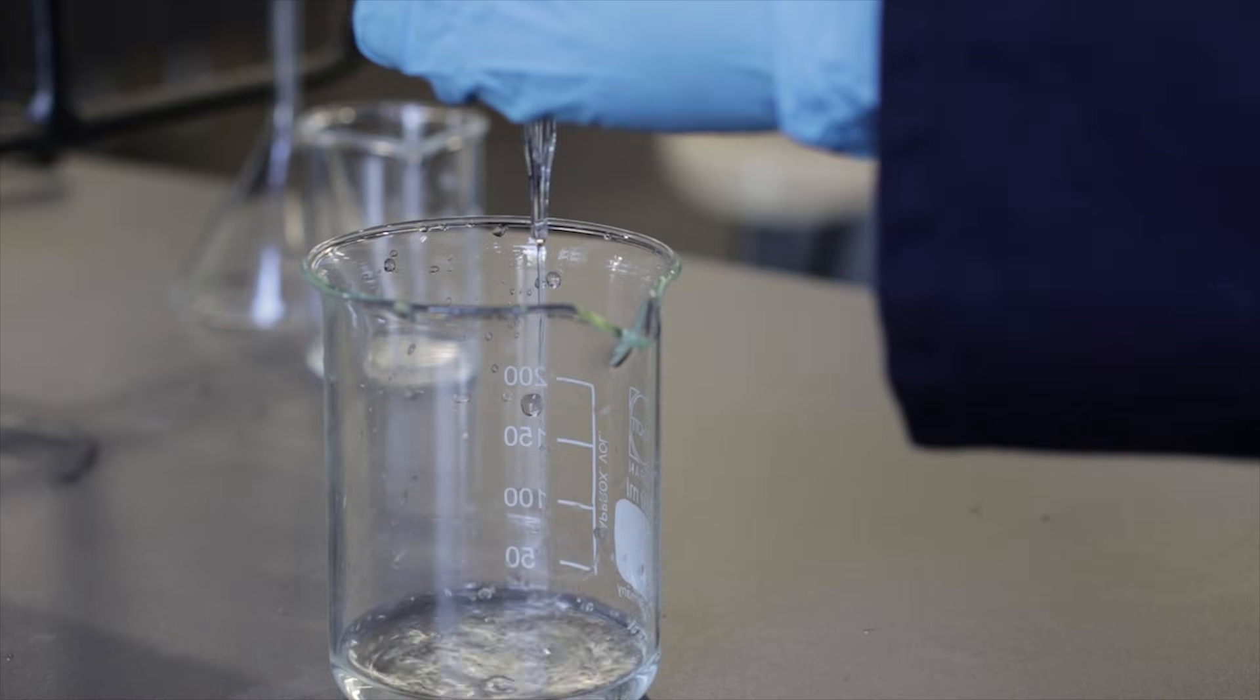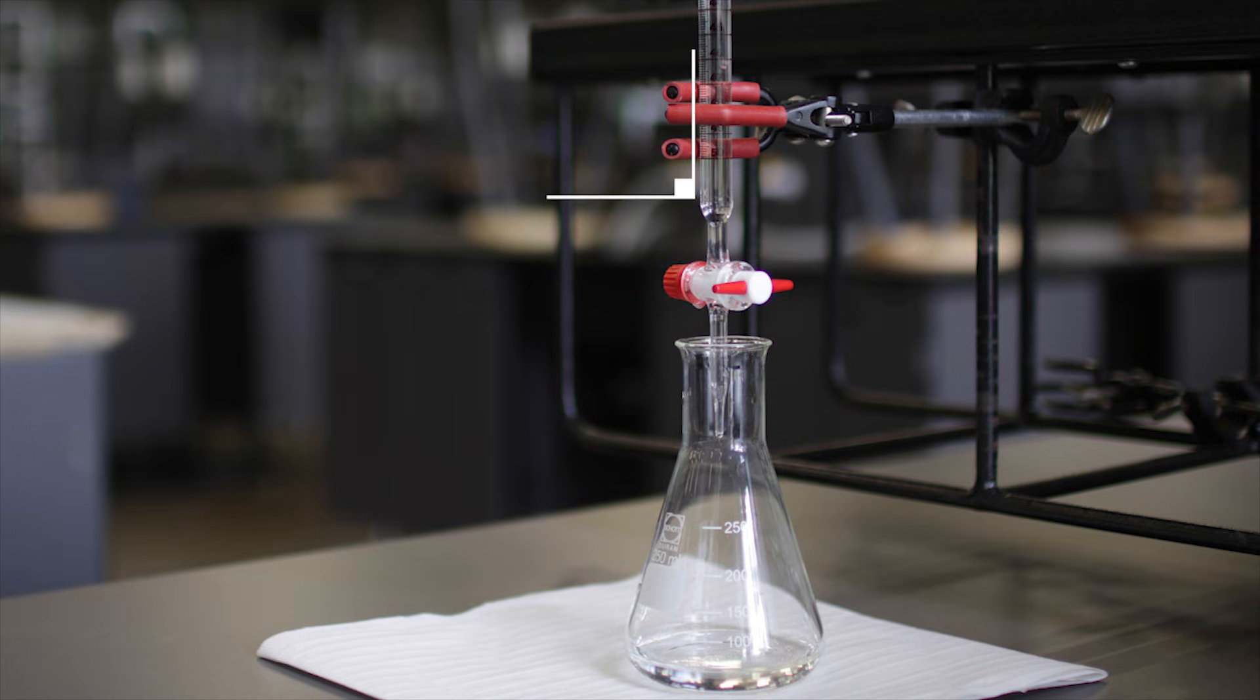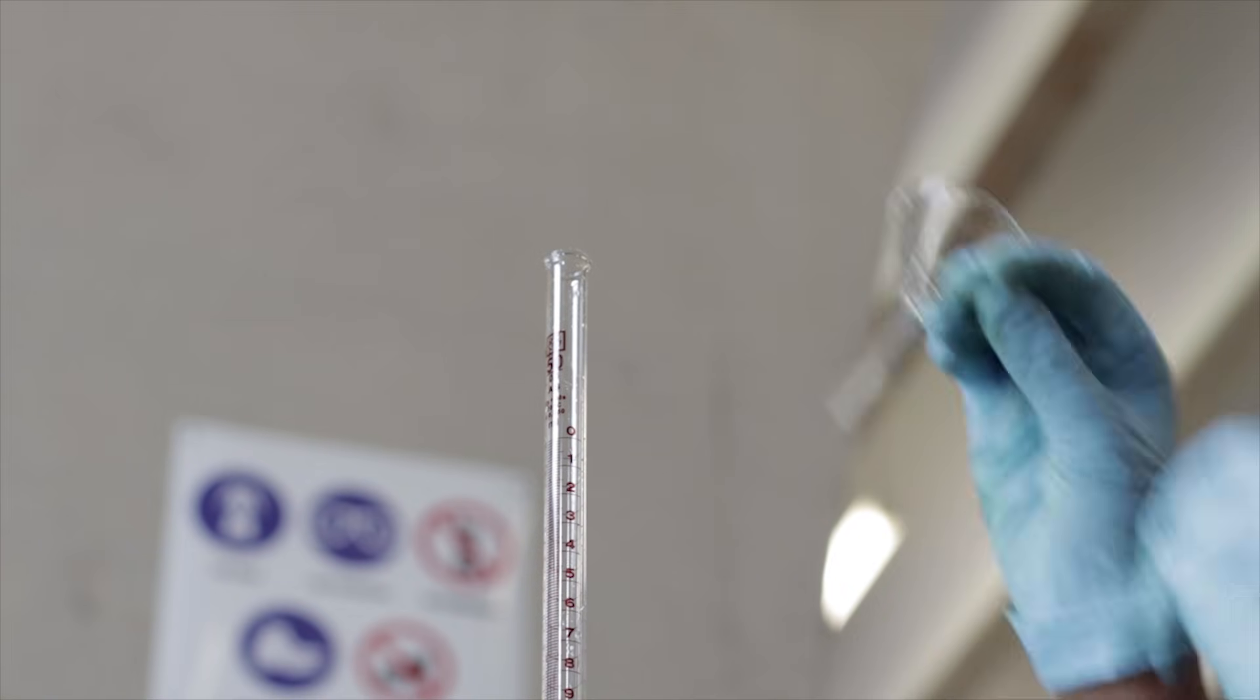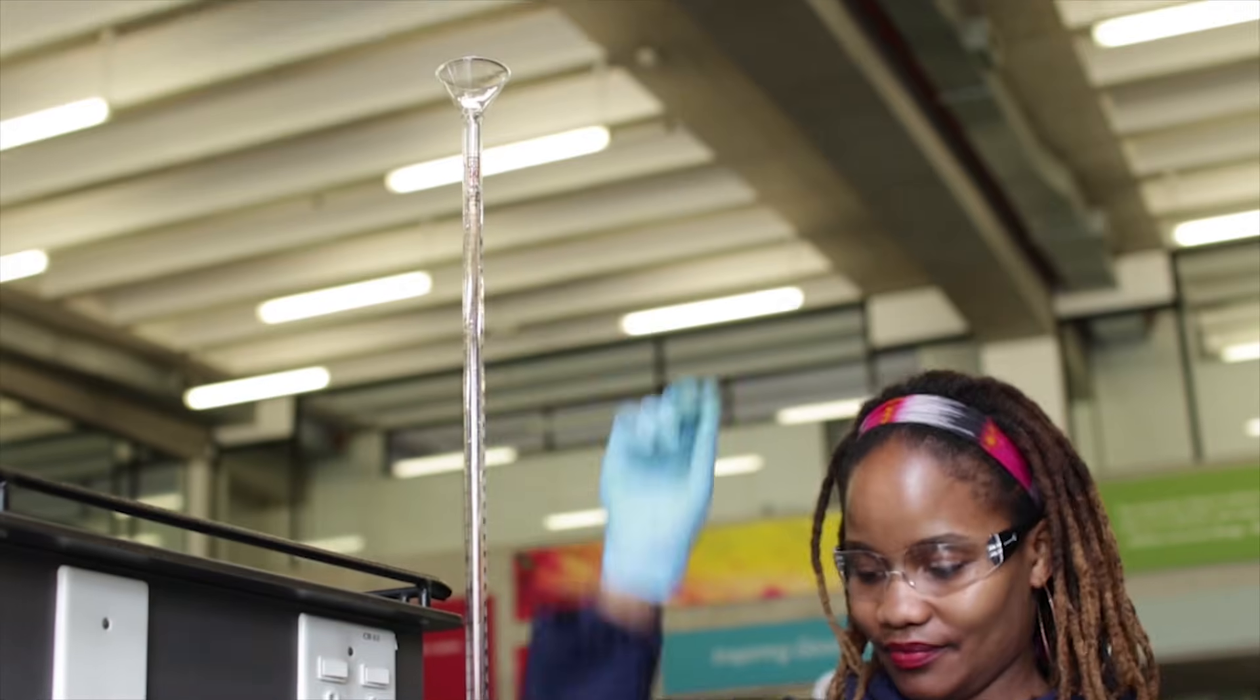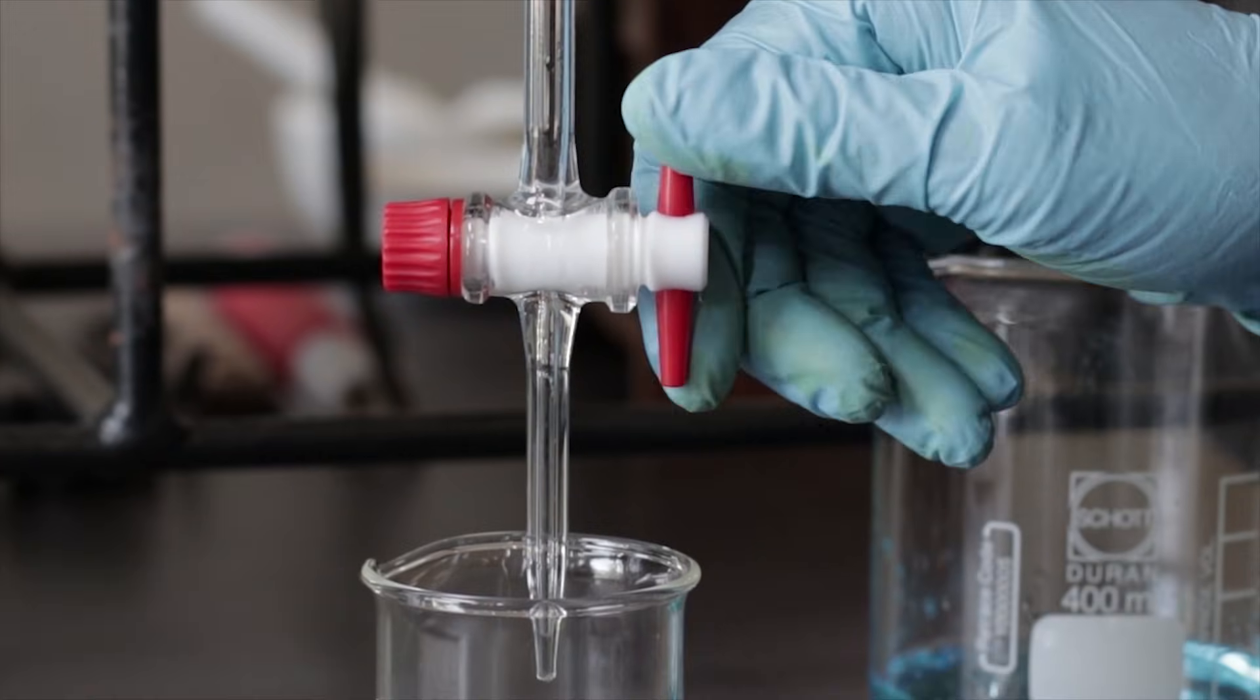After rinsing the burette it is clamped perpendicular to the bench stand. The funnel is then placed on top of the burette making sure the tap is closed.